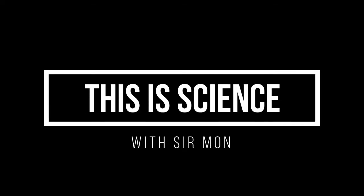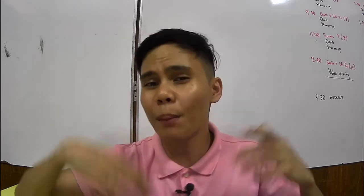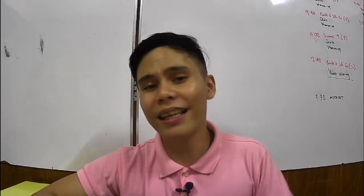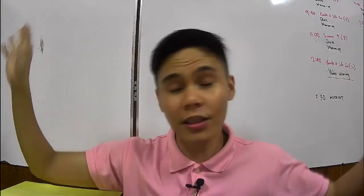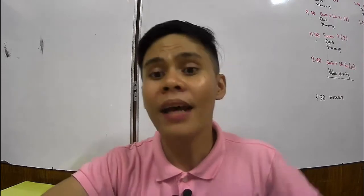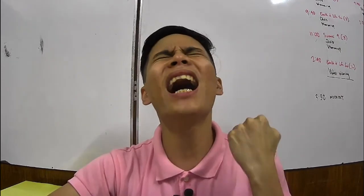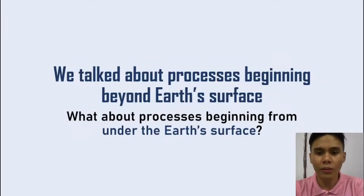Okay, three, two, one, let's jam. What's up guys? In the last video, we talked about the materials on the Earth's surface like minerals and rock, and we talked about the things that can affect things on the surface that are external to the surface, like water, wind, stuff like that. Now let's go inside. We need to look inside the Earth to see the next processes that we can discuss. Let's go.